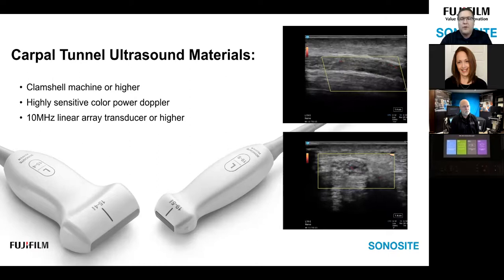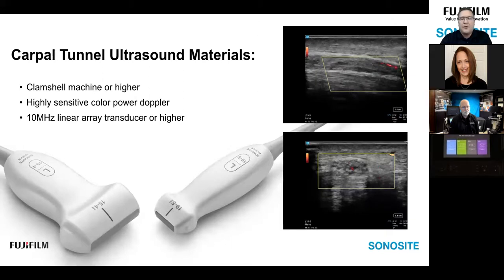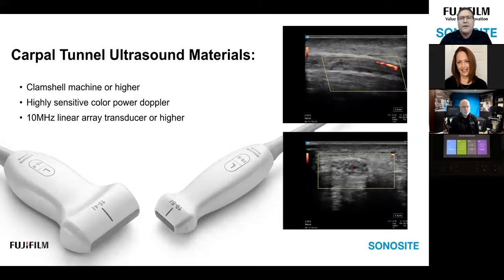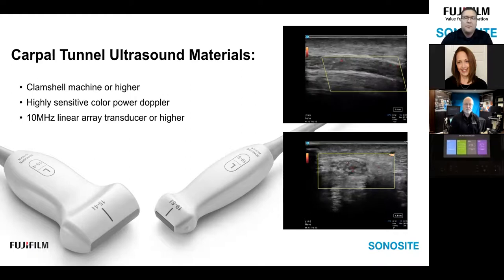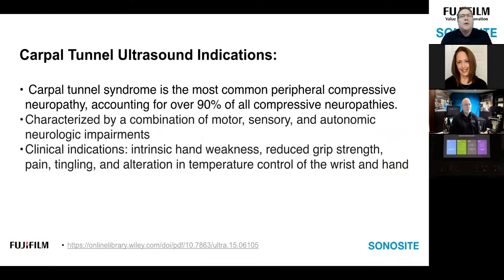Here's the L19 scanning a carpal tunnel case with swelling — the internal circumference of this median nerve is roughly 16 millimeters squared for reference. Anytime you suspect nerve swelling, go ahead and throw your color power Doppler on there and see if you've got any internal vascularity that would not normally be detected in a normal nerve — it may add to your clinical picture. Carpal tunnel is responsible for over 90% of compressive neuropathies. Indications can be hand weakness, reduced grip strength, pain, tingling, alteration in temperature, and control of the wrist and hand.